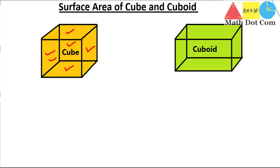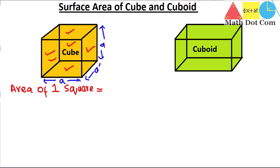The area of one square face of the cube: note that all sides of the cube are equal in length, so if each side has length a, then the area of one square is length × breadth = a × a = a².